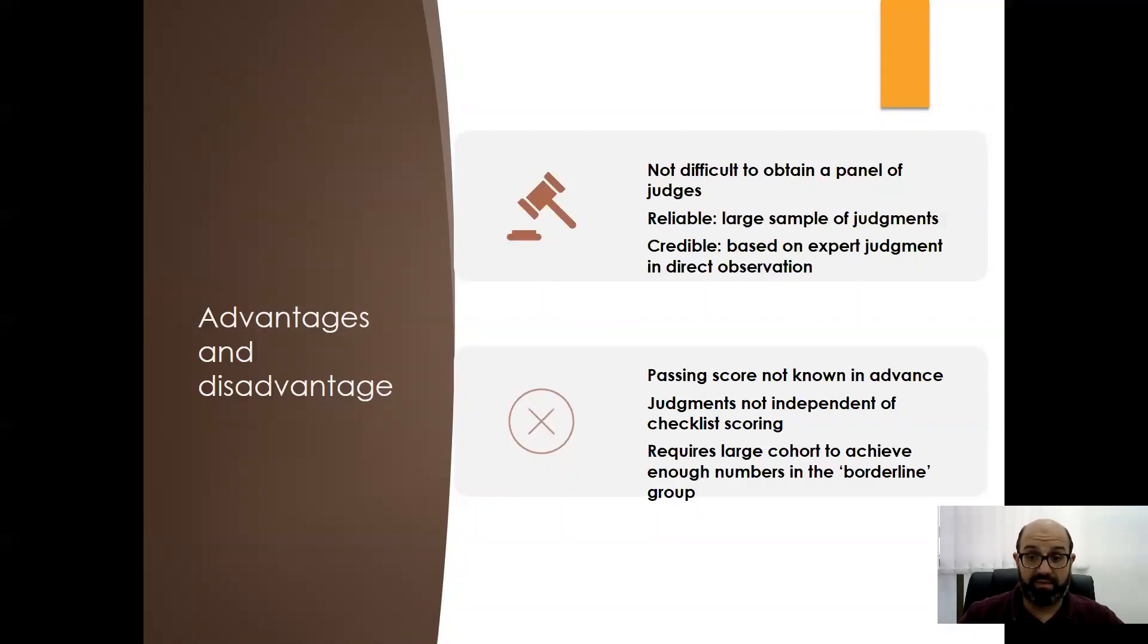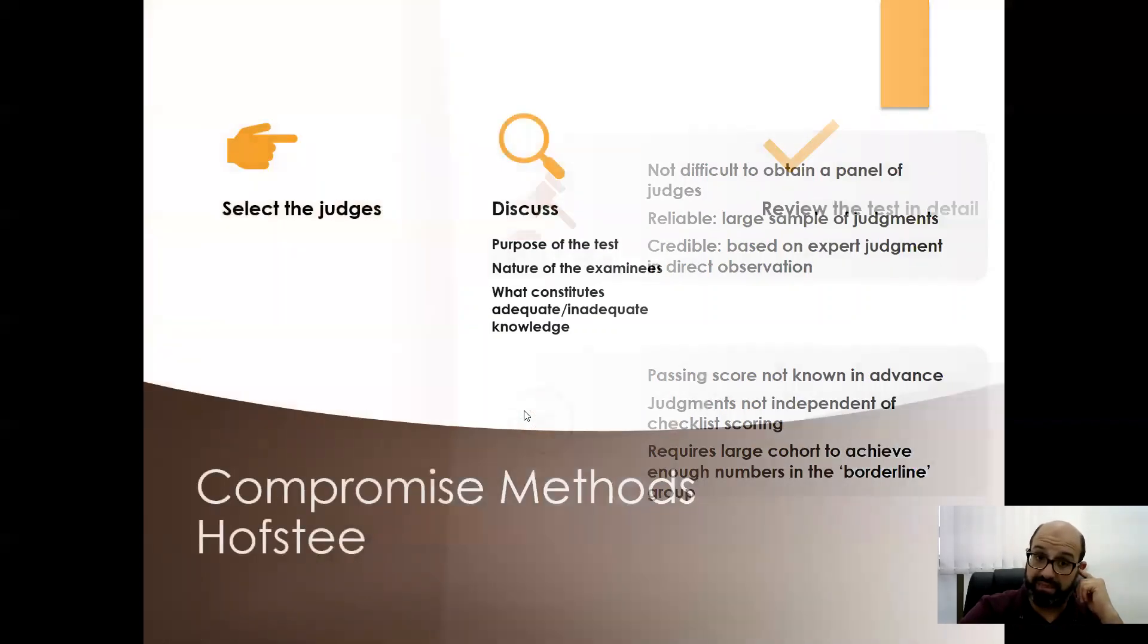But sometimes it's difficult for the assessor or examiners to put these in different judgments or assessments. It requires quite a large cohort to achieve enough numbers in the borderline group method which we need 20 plus borderline students to be able to calculate the pass mark.